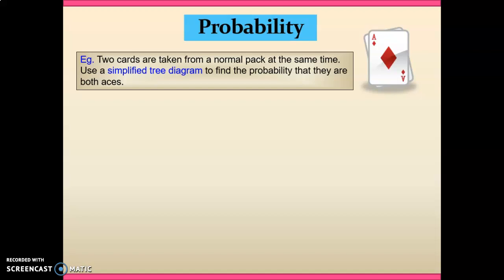So I want to show this finally. Two cards are taken from a normal pack at the same time. We want to draw a simplified tree diagram. But firstly, is this a dependent or an independent event? Well, I'd suggest because we took the two cards out simultaneously, we've not had any replacement. So I'd call that dependent. The chances of selecting a second ace, if one had already been removed, would drop away. Let's look at a tree diagram.